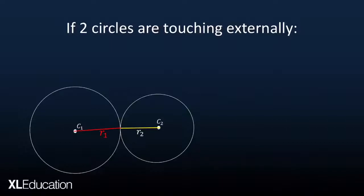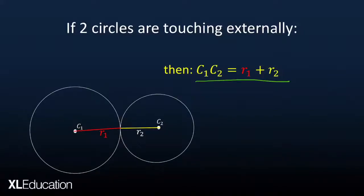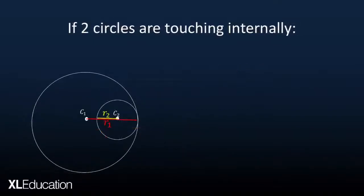The first scenario is what happens if two circles are touching externally. We have two circles, one with center C1 and the other with center C2. They need to satisfy the condition that the distance between center 1 and center 2 is equal to the sum of radius 1 plus radius 2.